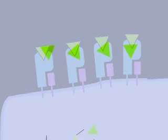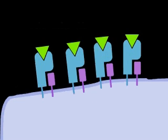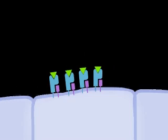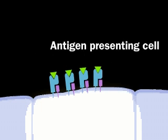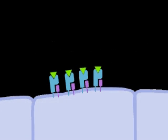A cytotoxic T cell, or killer T cell, can bind the displayed antigen if the T cell has surface T cell receptors that correspond to a specific antigenic determinant on the displayed antigen.